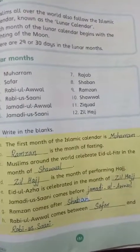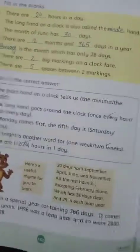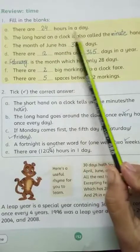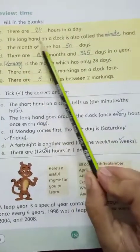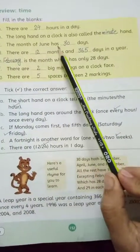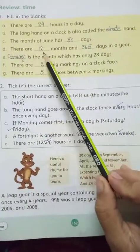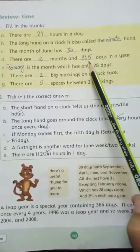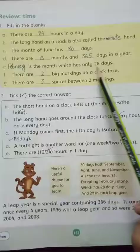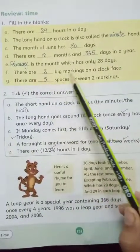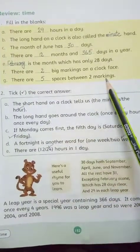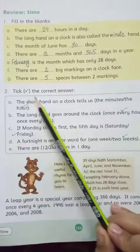Page 151 complete. Last page 152, review time. Fill in the blanks: There are 24 hours in a day. The long hand on a clock is also called the minute hand. The month of June has 30 days. There are 12 months and 365 days in a year. February is the month which has only 28 days. There are two big markings on a clock face. There are five spaces between two markings.